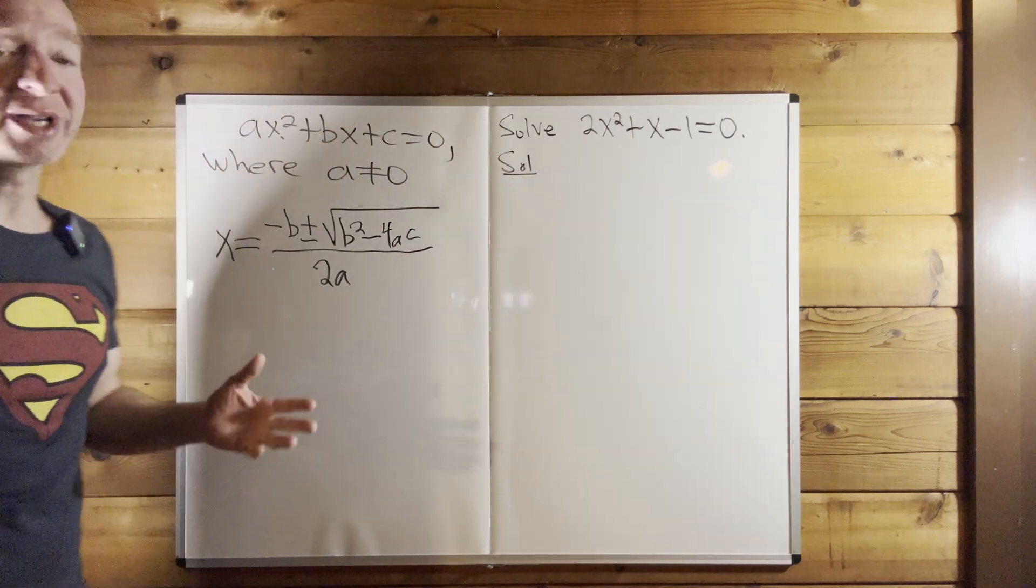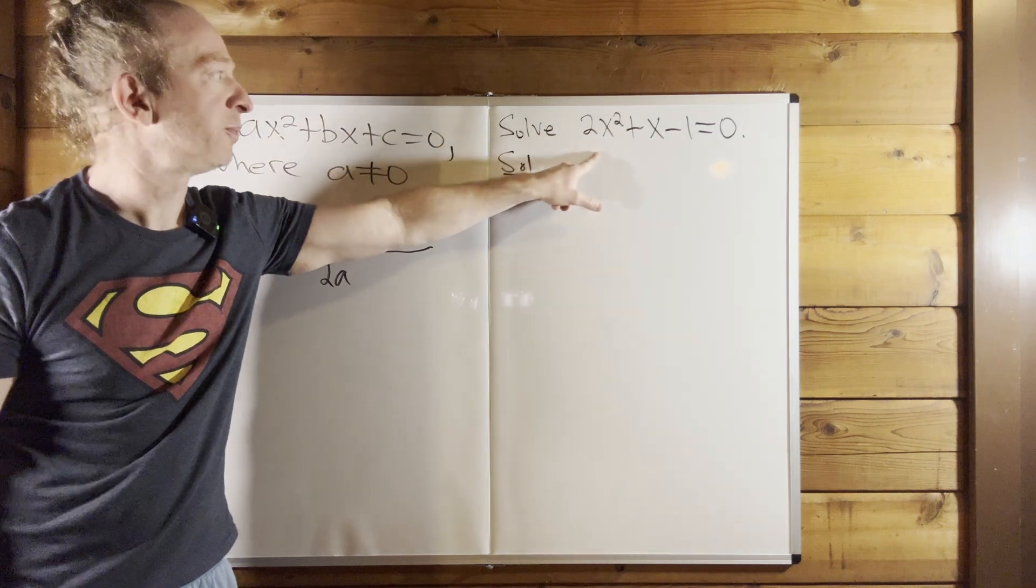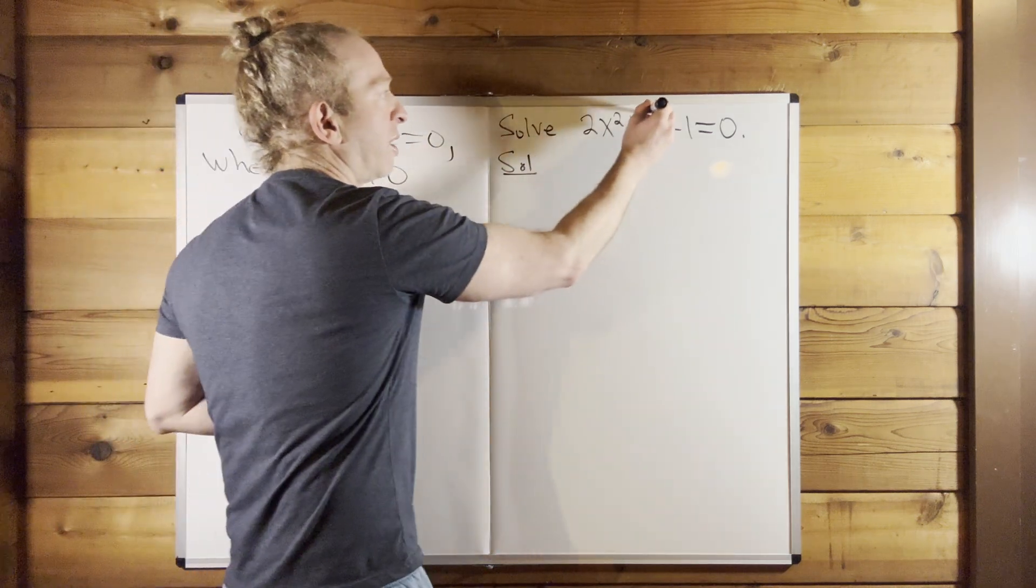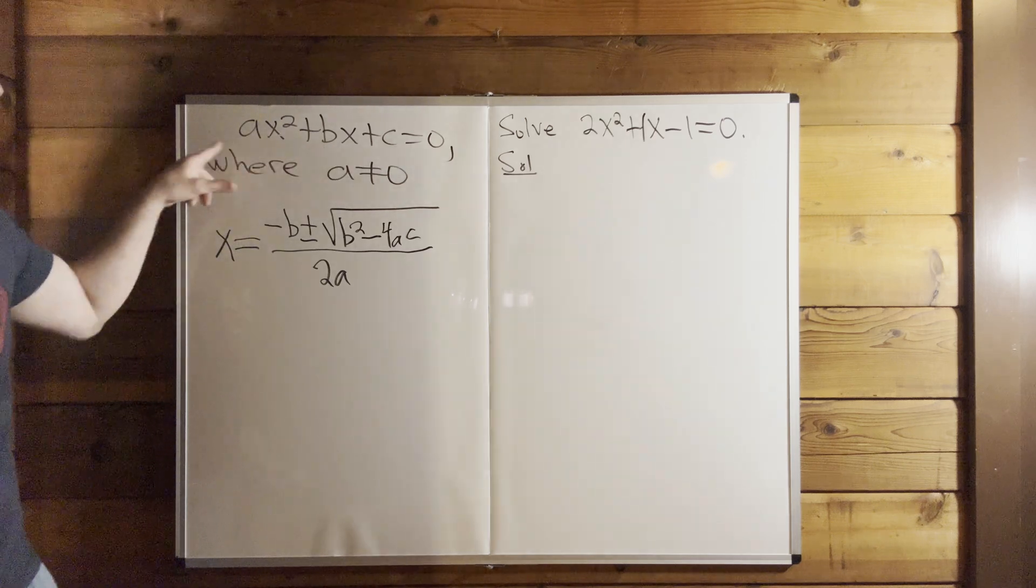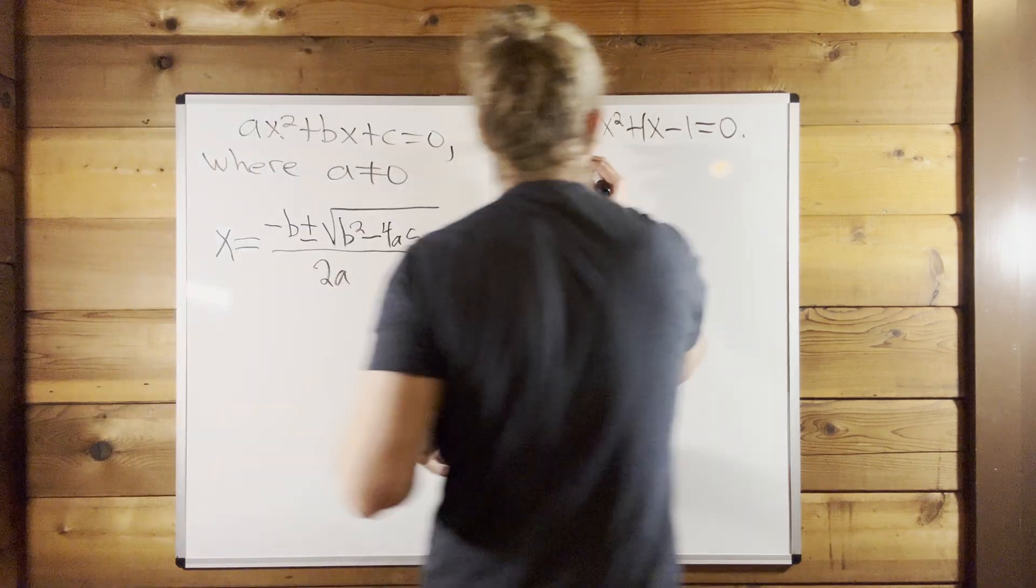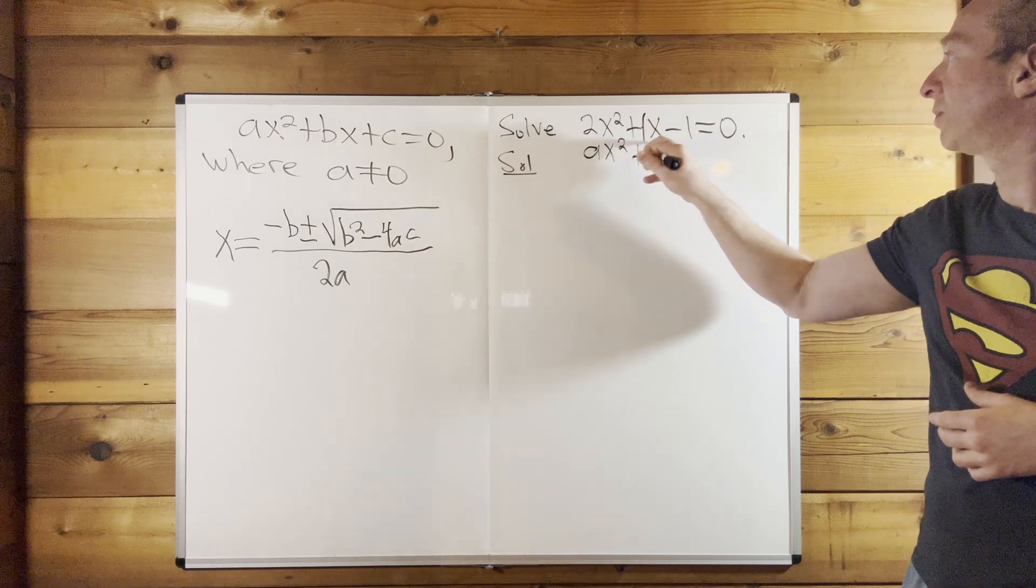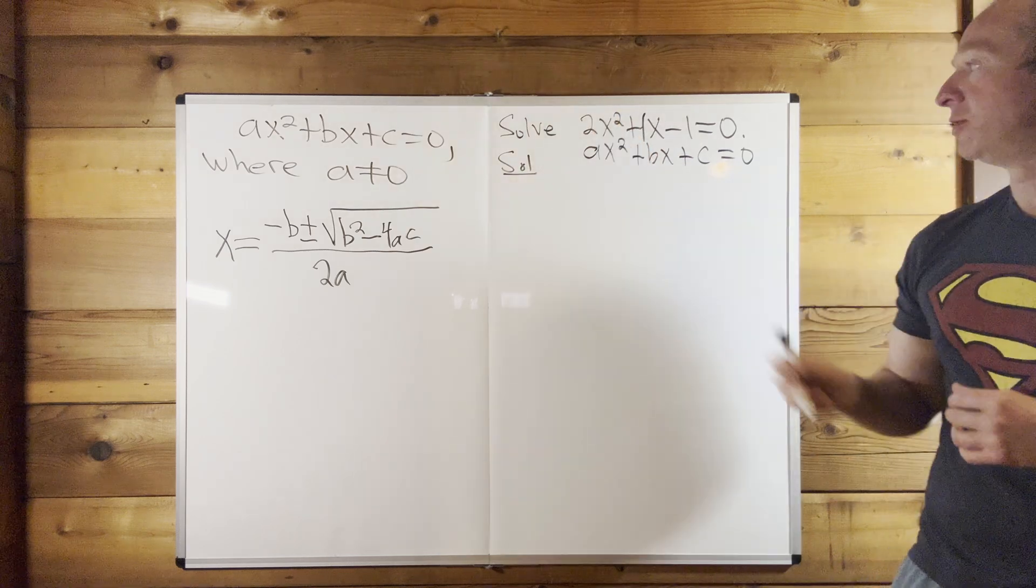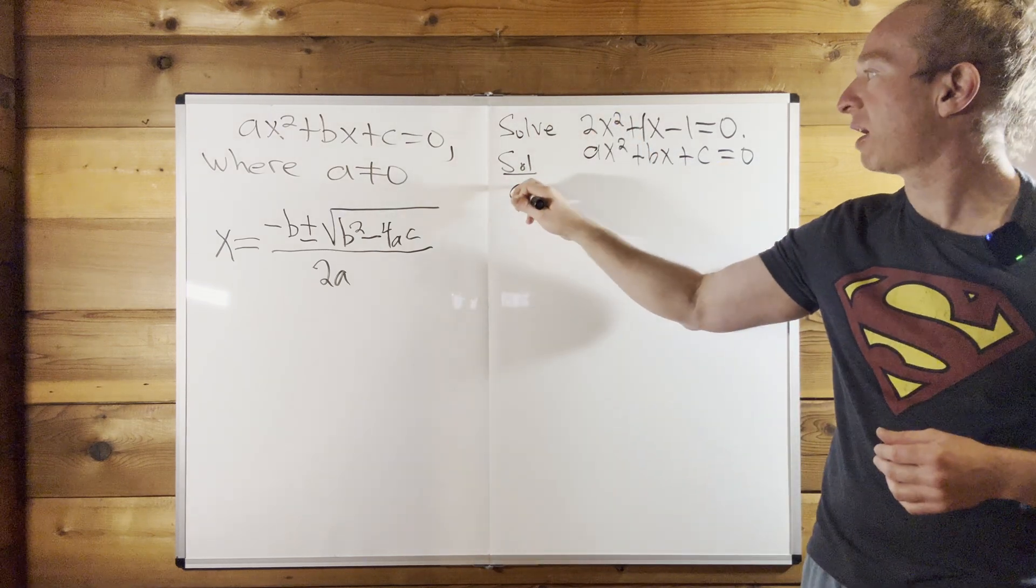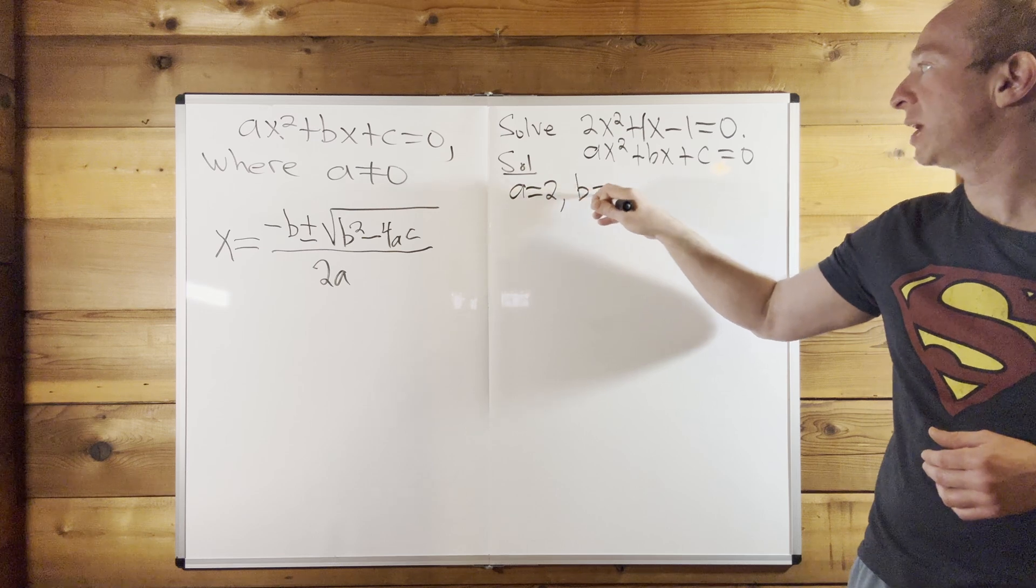The first thing we want to do is identify a, b, and c. So a in this problem is going to be 2, b is going to be 1, and c is going to be negative 1. Just using matching, right? And if it helps, you can write it underneath like this, ax squared plus bx plus c equals 0. And you can use matching here to see that a is 2. And I always like to write down the values of a, b, and c. I totally recommend doing that.